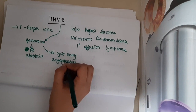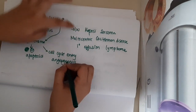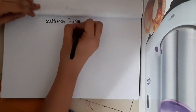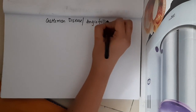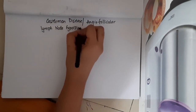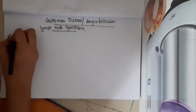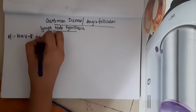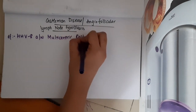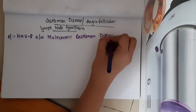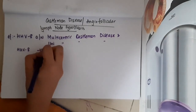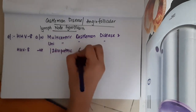Castleman disease is also called angio-follicular lymph node hyperplasia. It is caused by HHV8. There are two subtypes: HHV8-associated multicentric Castleman disease and unicentric Castleman disease, as well as HHV8-negative or idiopathic Castleman disease.